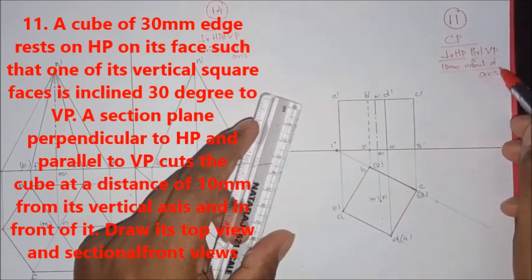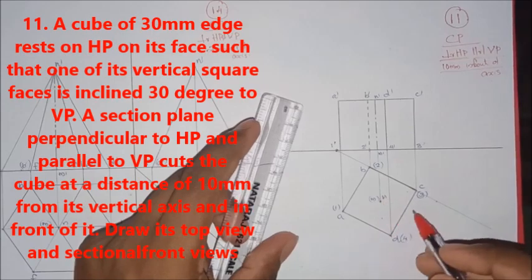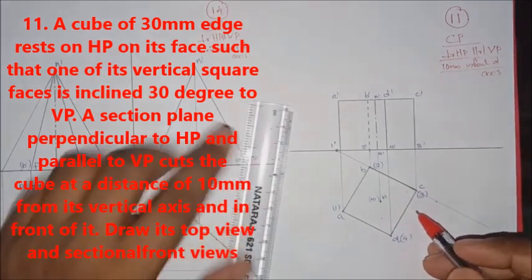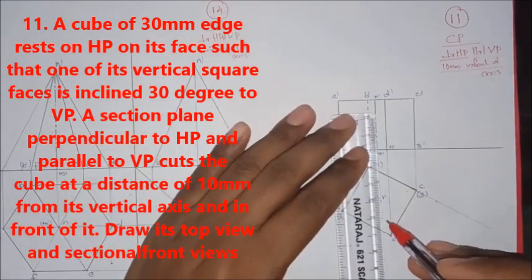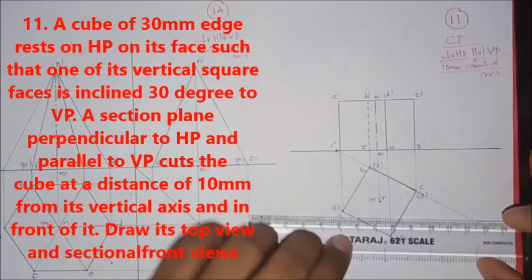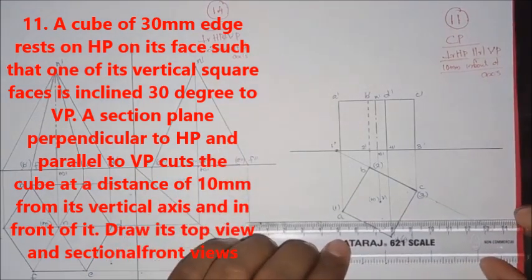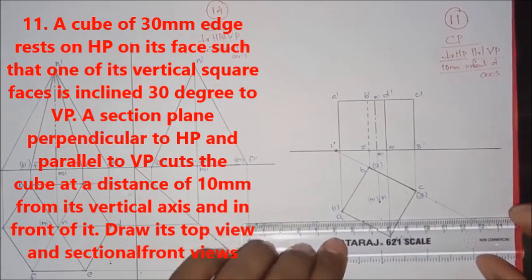The passing point is 10mm in front of the axis. So the axis is 10mm in front — vertically 10mm in front of the axis. Then draw the section.